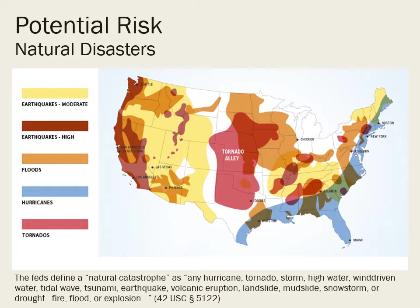Since assessing potential risks is part of all-hazards management, let's look at some of those risks. First, natural disasters. The feds define natural disasters to include hurricanes, tornadoes, earthquakes, landslides, snowstorms, fires, floods, and explosions. Every community is vulnerable to natural disasters. In the U.S., because we're such a large country, different parts of the country are prone to different types. The southeast and east coast have a risk for hurricanes, the Midwest for tornadoes and floods, and the western part gets hit with earthquakes, avalanches, landslides, volcanoes, and fires.